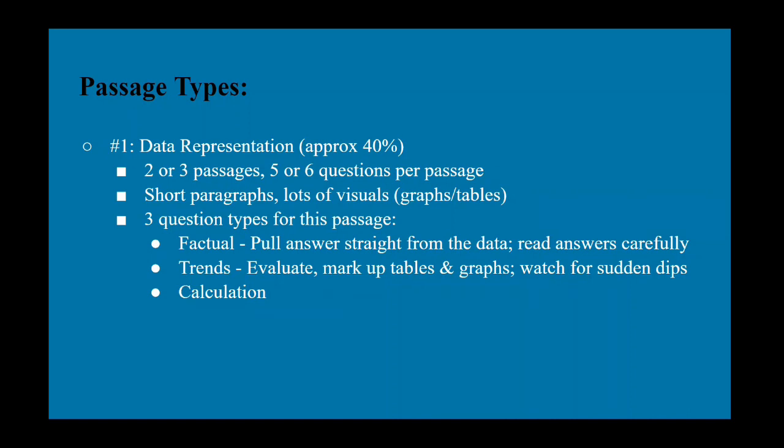The aim is that you identify and extrapolate information from the data they give you. There are three question types for this passage. One is factual in which you just pull an answer straight from the data. You read the answer choices carefully and then look around and you'll find the answer. It doesn't require much critical thinking. Then there are trends. That's another type in which you evaluate. I recommend markup tables, the tables and the graphs and watch for sudden dips and changes. Just overall understand the trend of the data and what that means and how that translates to what the actual experiment is trying to illustrate or prove. And then the third type is calculation. You use the data they give you and then you calculate an estimate or a value or something related to the experiment.